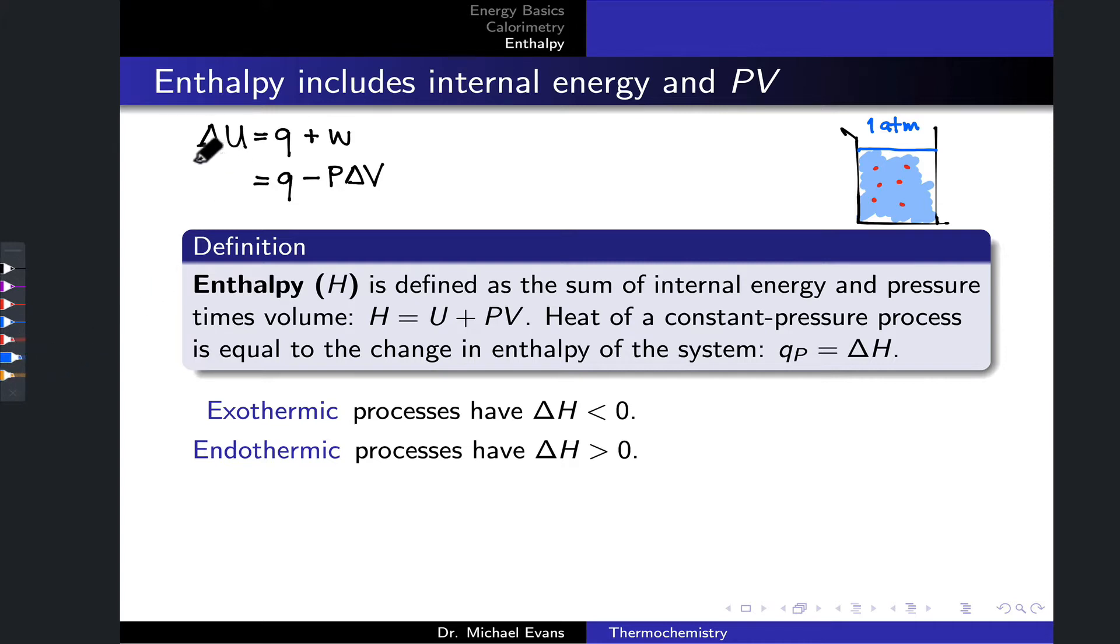let me actually use blue, that we have a state function here and a state function here, and only one path function remaining in this equation. Delta U equals Q minus P delta V.